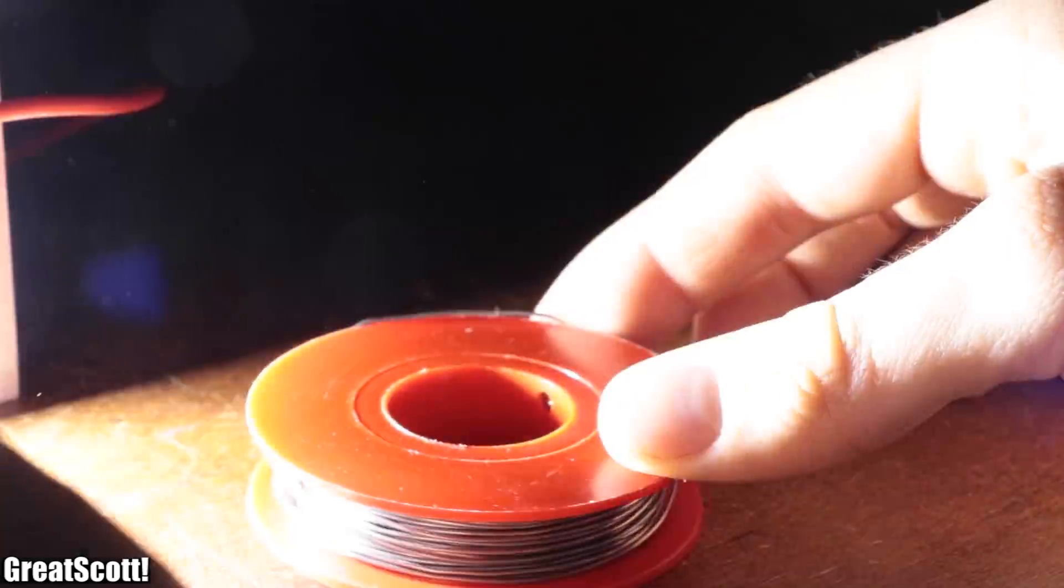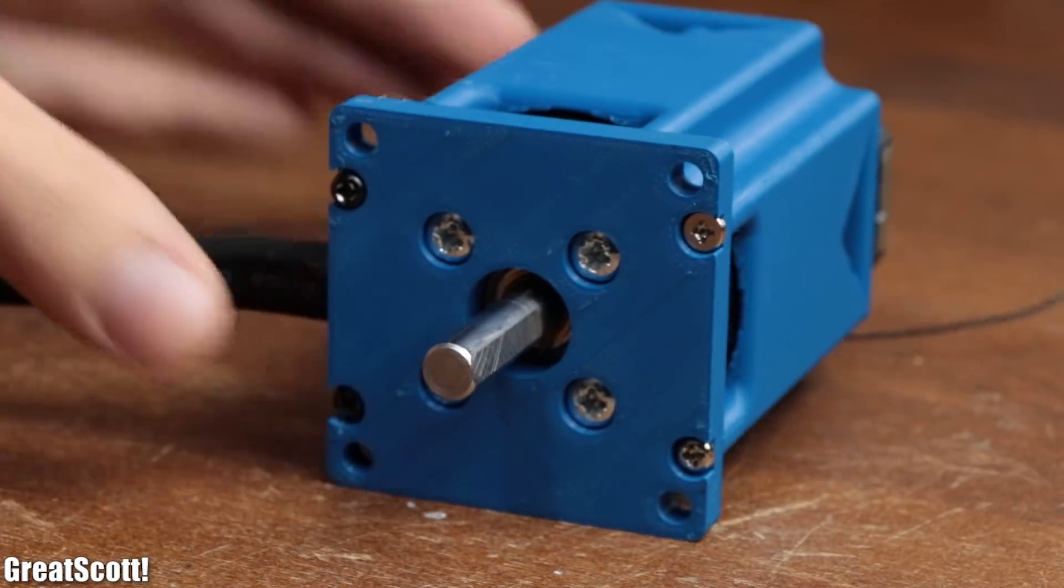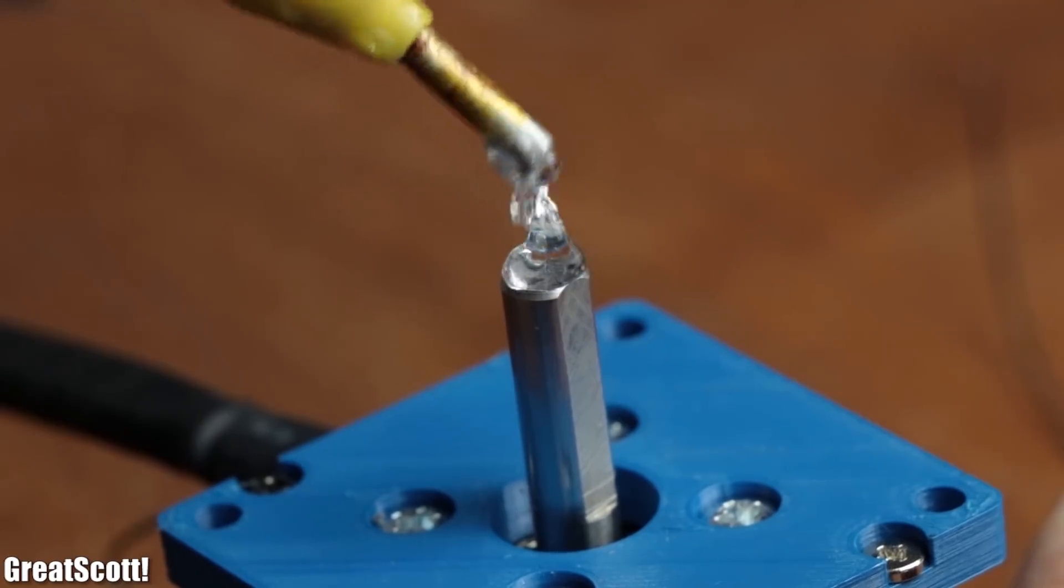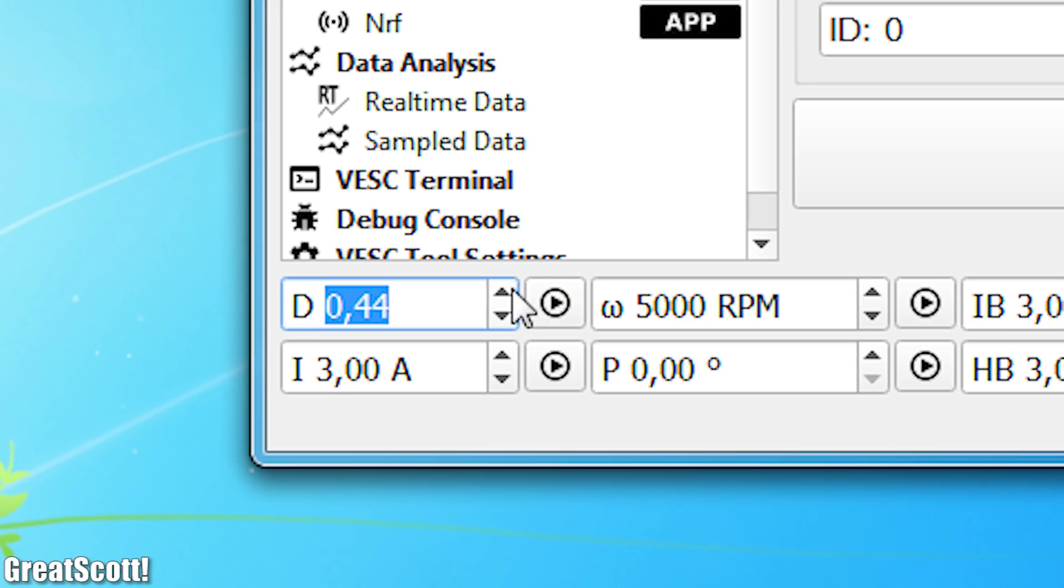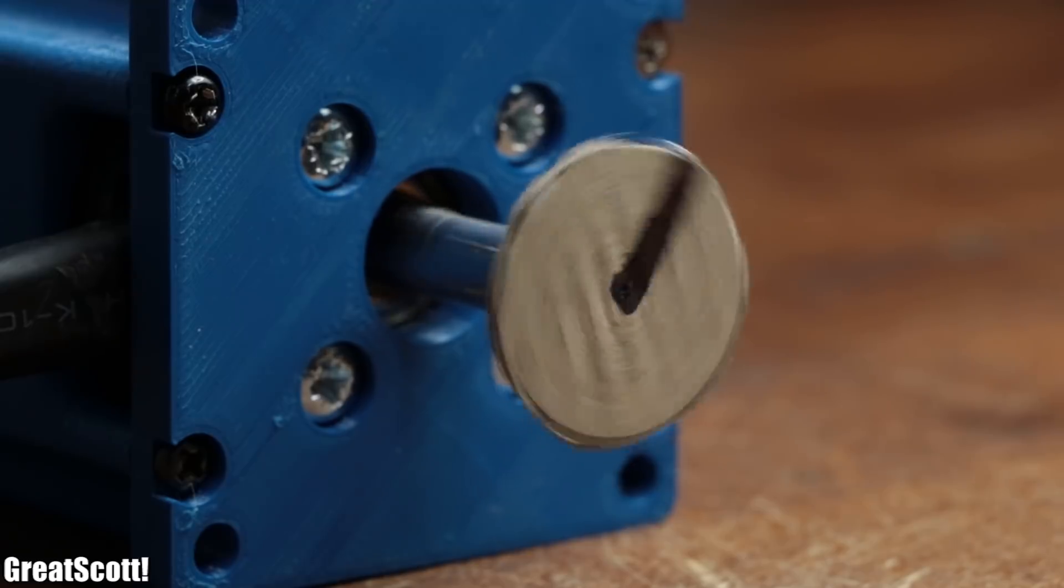But besides this nightclub application, there's also a scientific application. If we for example take a motor, attach a disc to its rotor with a marking and let it spin with an unknown RPM, then it would look something like this on camera.